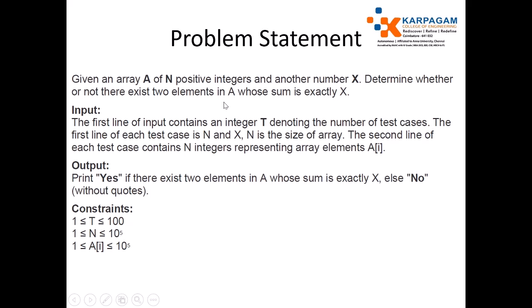Here we need to identify two positive numbers whose sum is exactly X, the given number. If it is available, just print yes, otherwise print no. The input: the first line of input contains an integer T denoting the number of test cases.